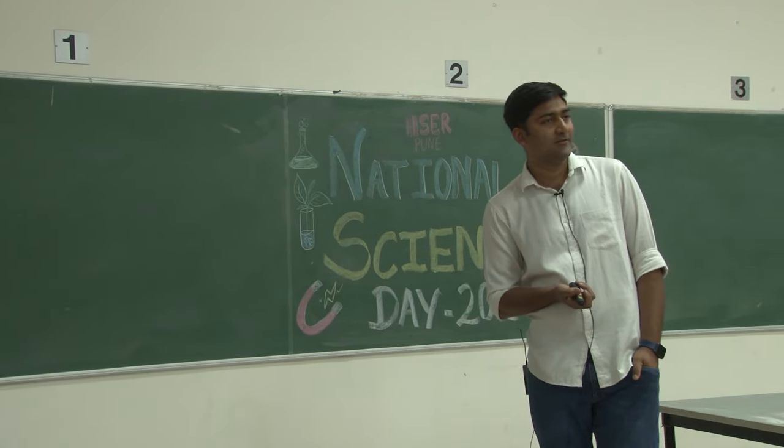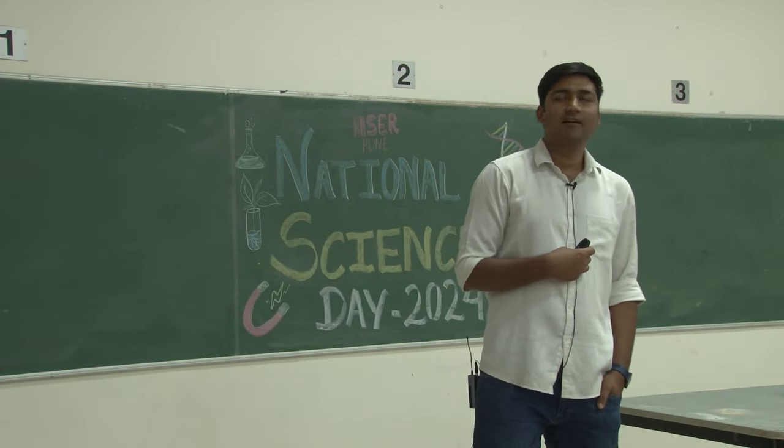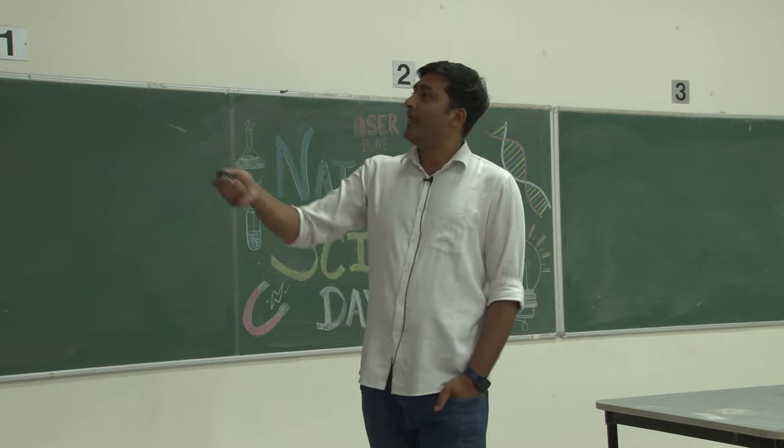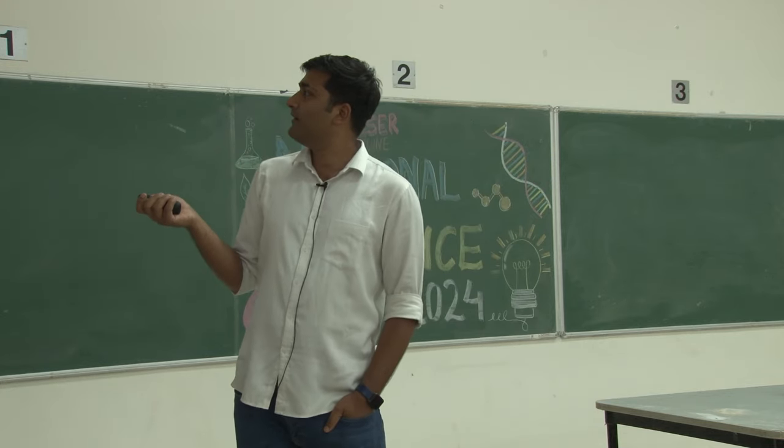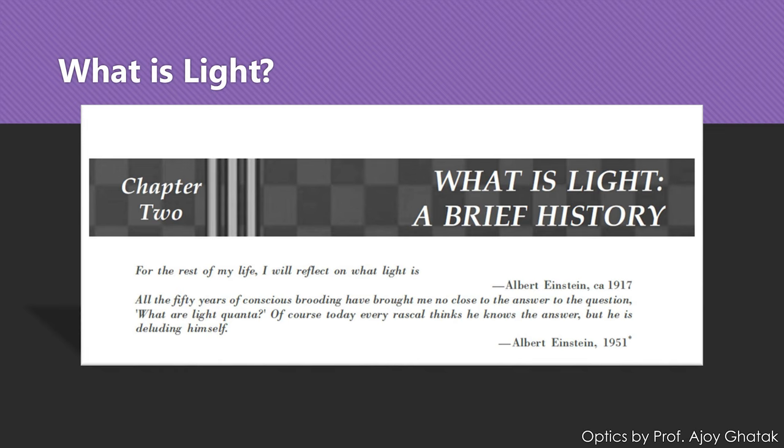Light, what is it? Form of energy. Very good. So, this is a book from IIT Delhi. It says what is light. And it says Albert Einstein's two quotes. In 1917, Albert Einstein says, for the rest of my life I will reflect on what light is. I, my rest of my life, will think that light is what happens.